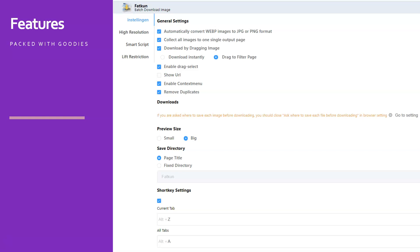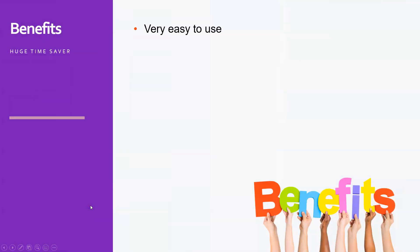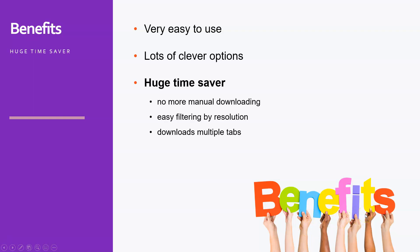Here you can see some of those settings. It's really a set-and-forget situation — I actually never had to touch the settings because they were already as I wanted them. But if you want, you can change things inside. So what are the benefits? To sum it up, it's a huge time saver, especially when you download a lot of images. It's very easy to use, with lots of clever options to filter and sort. And last but not least, it's free to add to your Chrome browser, which is always nice.